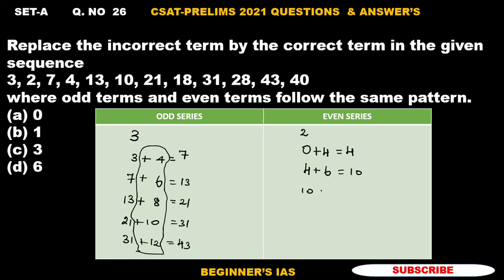Then 10 plus 8 is equal to 18. Then, 18 plus 10, which is equal to 28. Then, 28 plus 12, which is equal to 40.